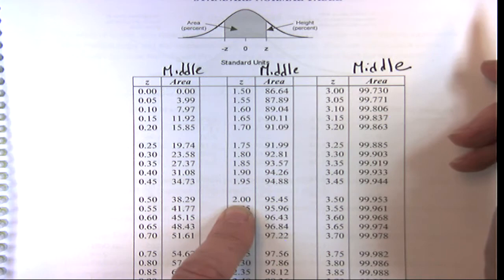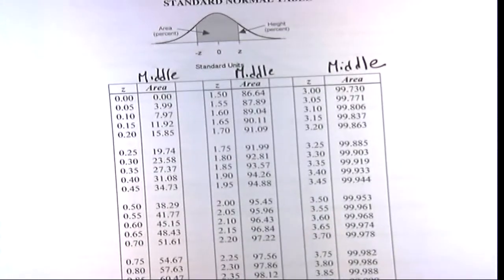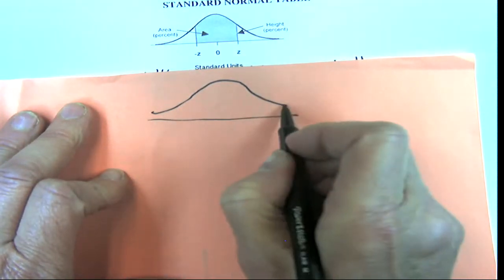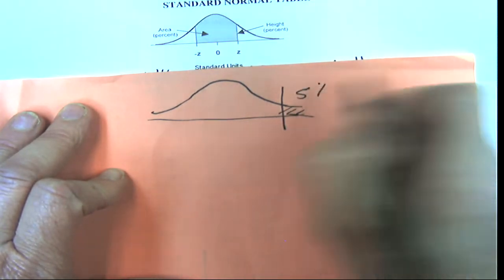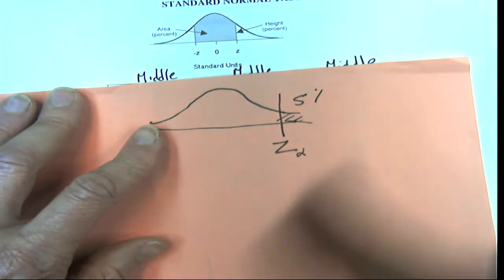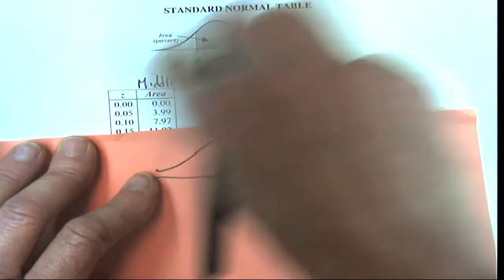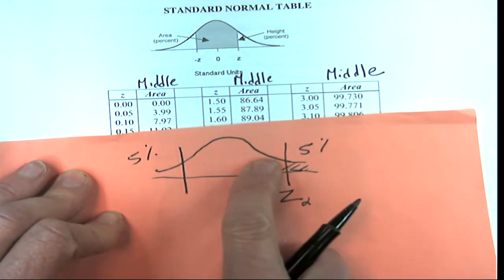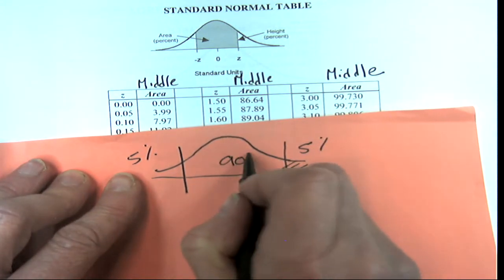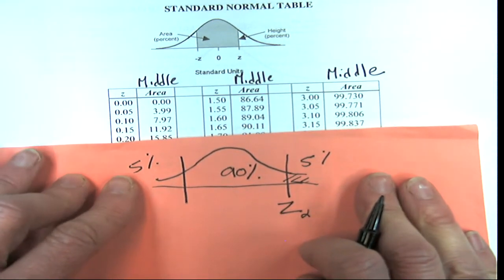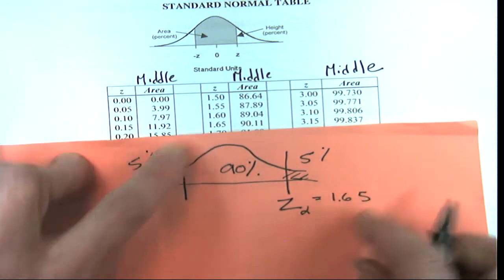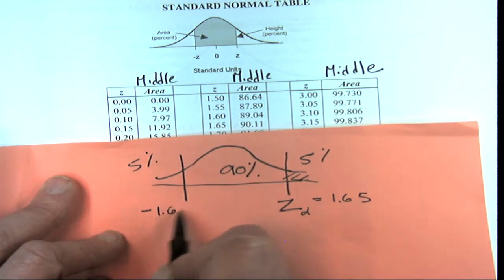Now we have z_beta = 0.35. We look this up in the normal table to get the middle area corresponding to z = 0.35. Since the curve is symmetric, it doesn't matter which side we're on. From the table, z ≈ 0.35 gives a middle area of approximately 27%.